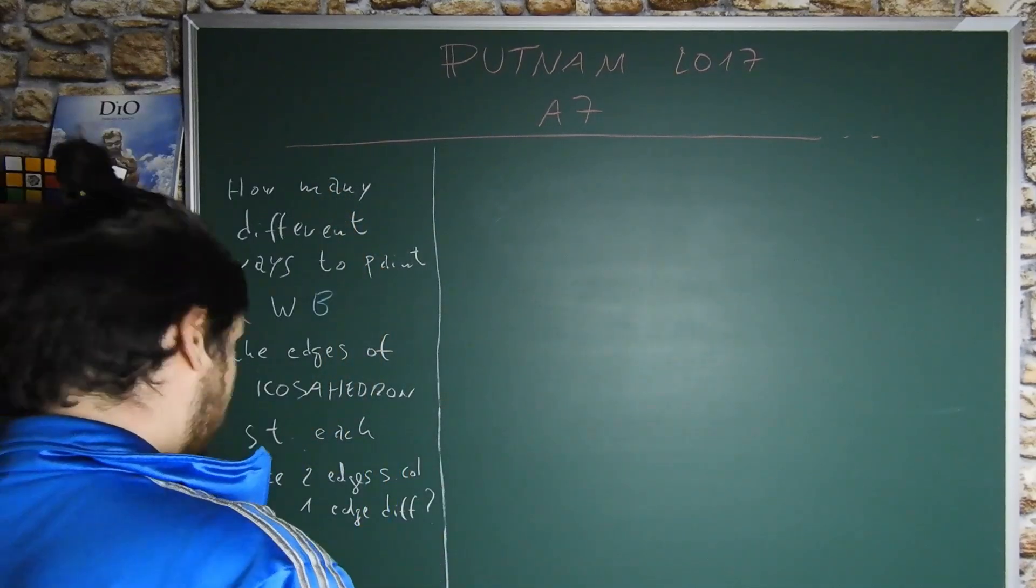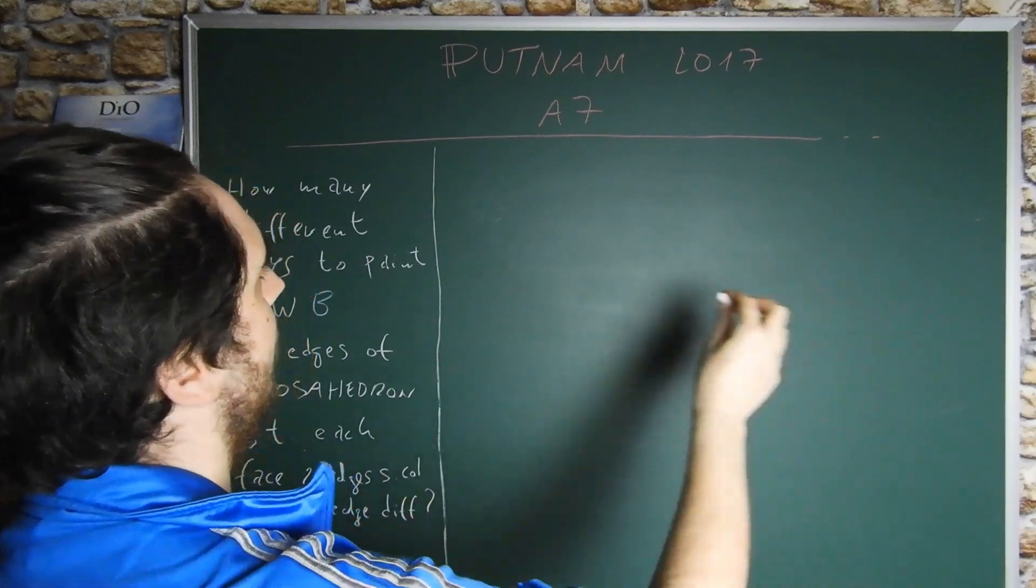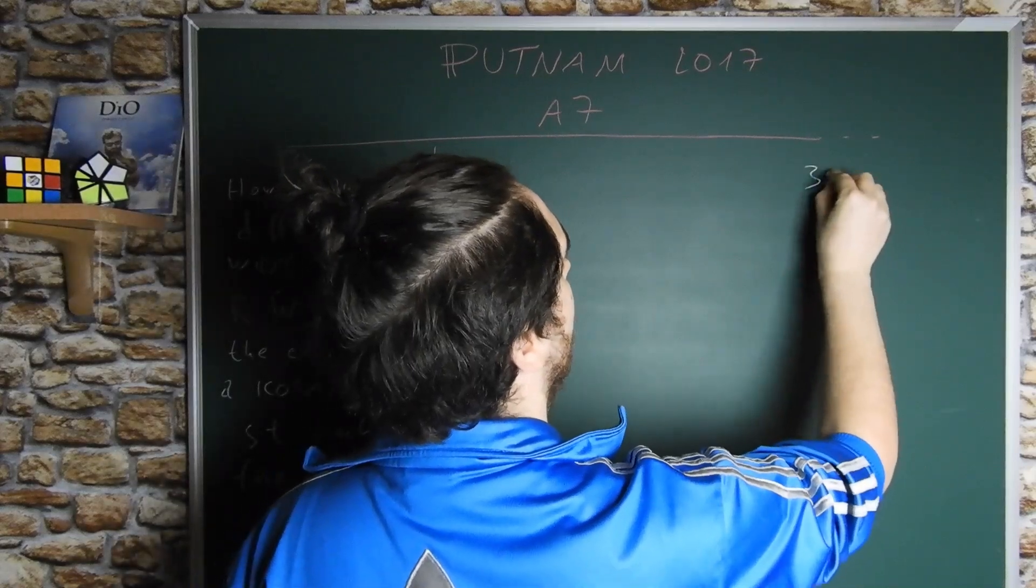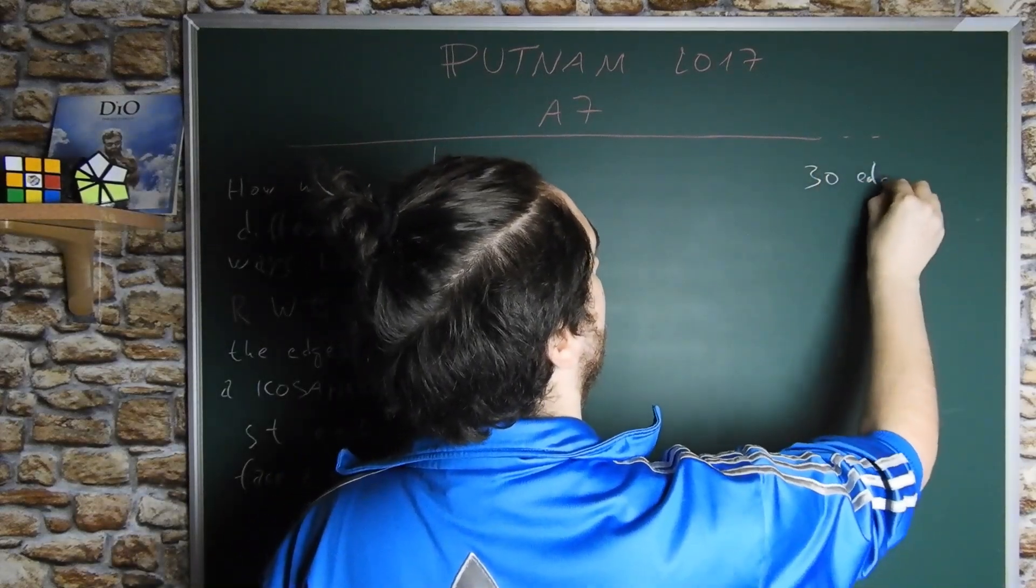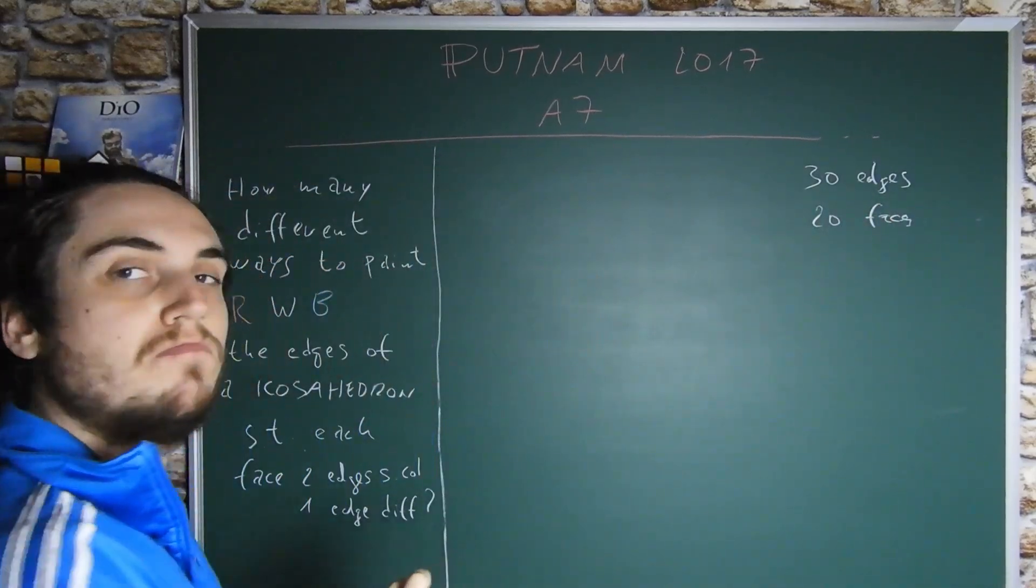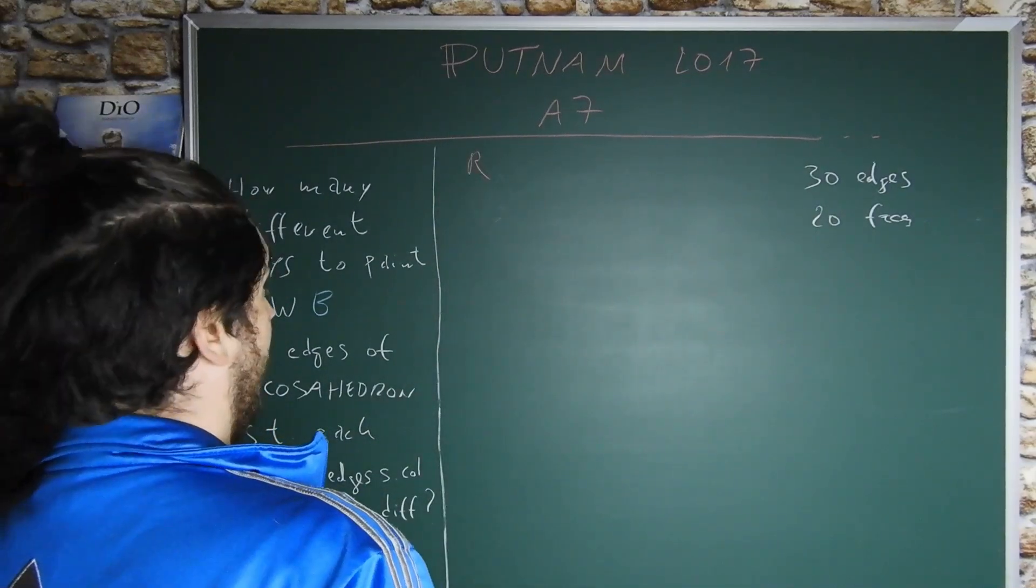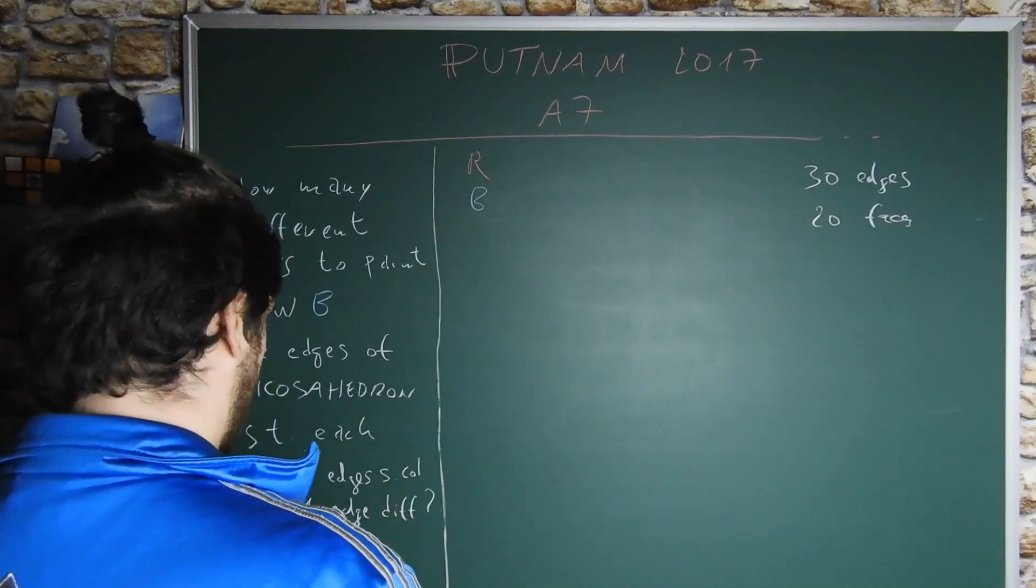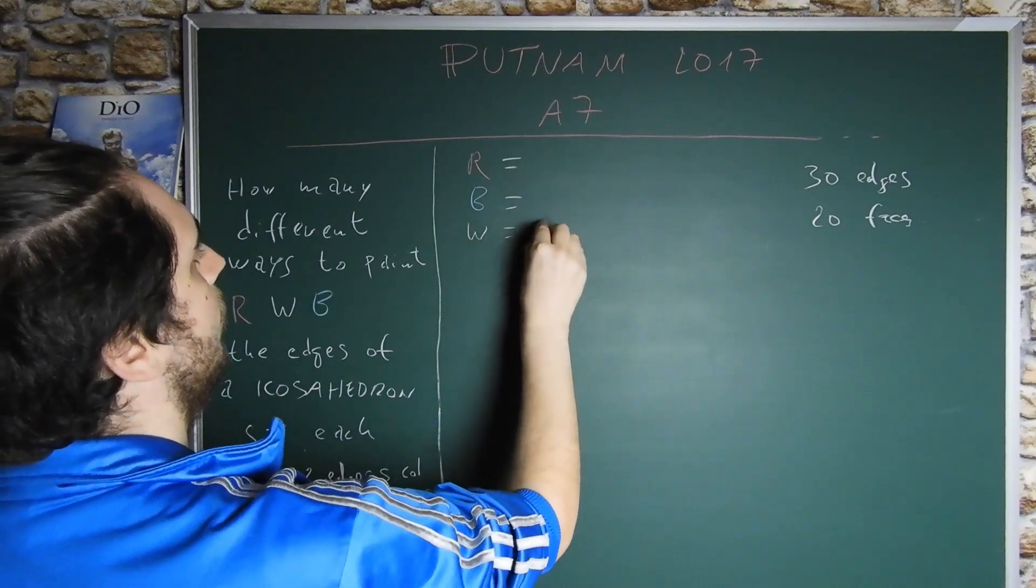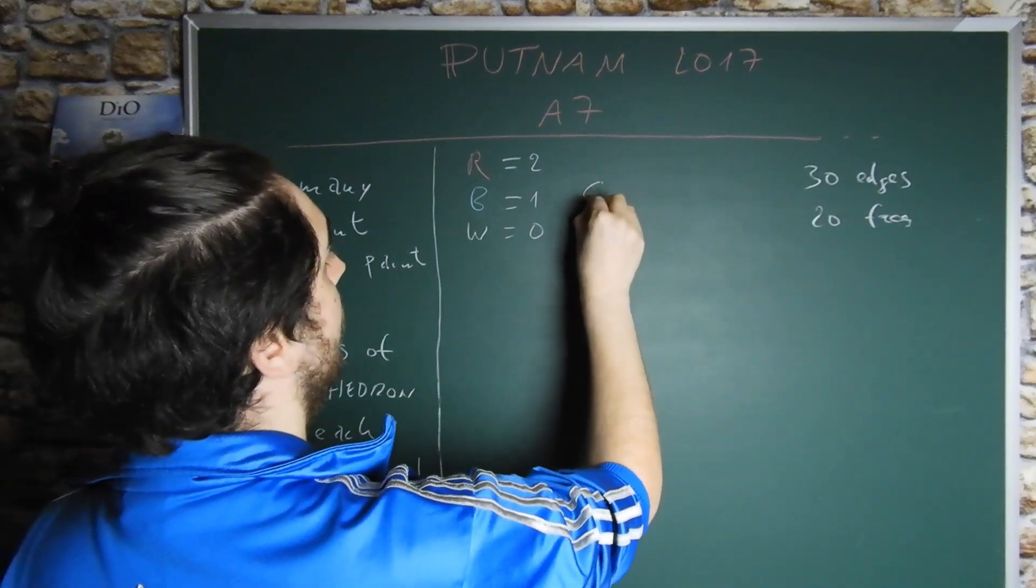We see that in order to attack this problem, we need some linear algebra. In particular, we note that our icosahedron has 30 edges and 20 faces. Our red color, blue color, and white color are the number 0, 1 and 2, so these are elements of the field F3.